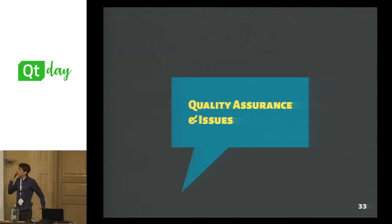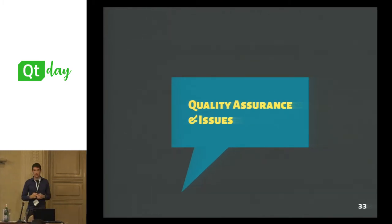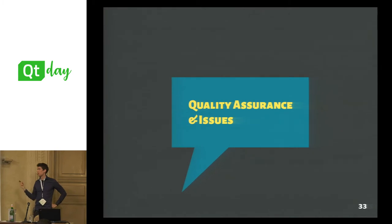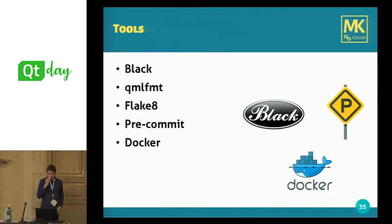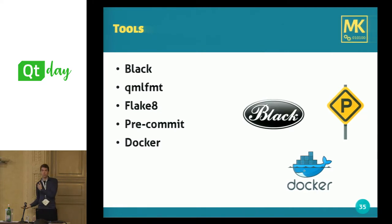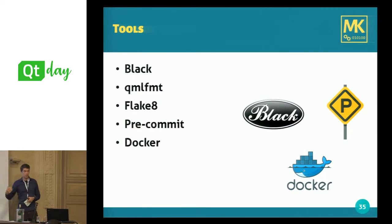The next thing I want to talk about is quality assurance and the issues I discovered working with Qt Quick and Python. The issues are very important because you will definitely encounter them, and there's a lot less documentation about them in official docs and on forums. In our project, we found it very useful as a first level of quality assurance to use tools like static analysis and a standard code format.